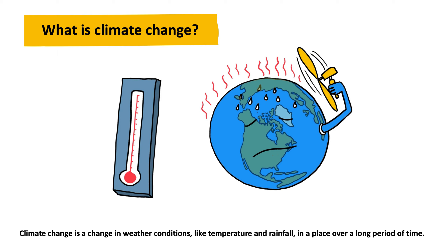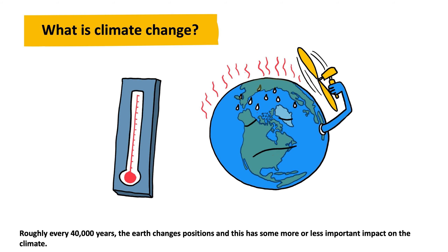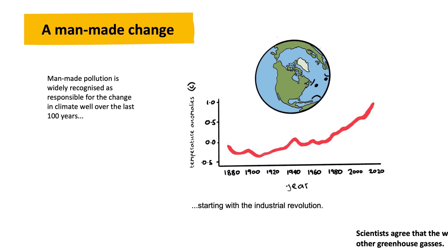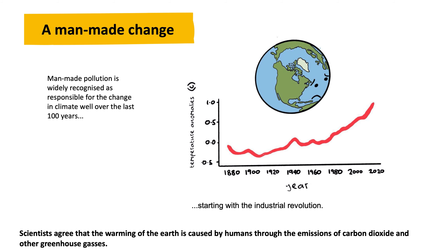Climate change is a change in weather conditions, like temperature and rainfall, in a place over a long period of time. In fact, the Earth was covered in ice about 800 million years ago, and is currently going through an ice age that has been happening for the past 2.5 million years. Scientists agree that the warming of the Earth is caused by humans through the emissions of carbon dioxide and other greenhouse gases.